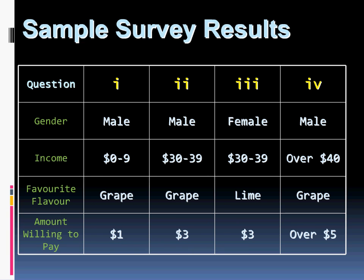To give you an example, pretend I surveyed four people. The gender, income, favorite flavor of juice, and the amount they're willing to pay for that juice are shown as follows. There are three males and one female in the survey. Two people have incomes between $30 and $39 per week, one over $40, and one zero to nine. There are three people who like grape-flavored juice versus lime, and two people willing to pay $3 for juice, one over $5, and one at $1. All of this is just data on its own — it doesn't tell us enough. Correlations can begin to tell us more.